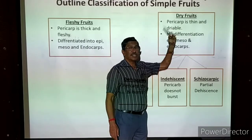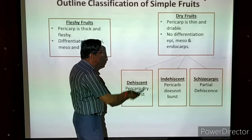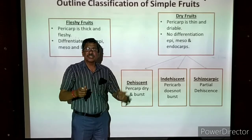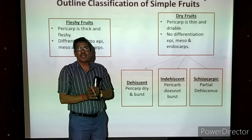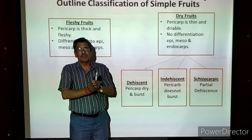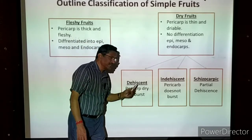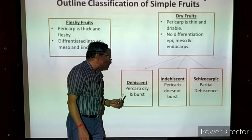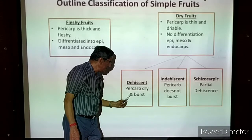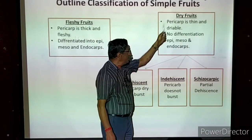Dry fruits are further classified into three types in the outline classification. The first is dry dehiscent fruits. Dehiscent means bursting — the fruit dries repeatedly and at a particular stage the pericarp bursts, scattering the seeds. That is called dehiscent bursting of the fruit. So dry dehiscent fruit: the pericarp is drying and bursting to release the seeds.